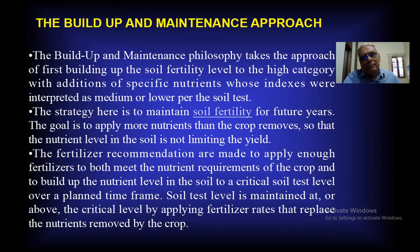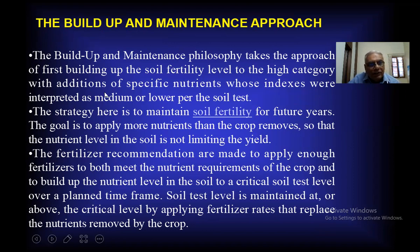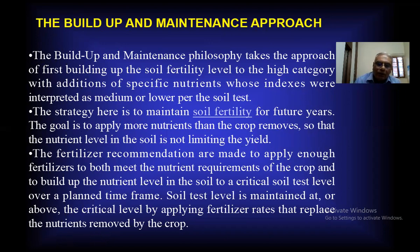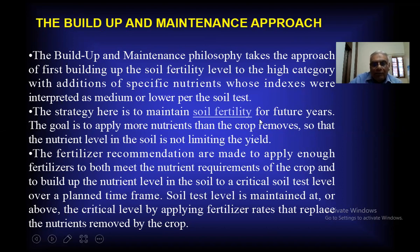The build-up and maintenance approach has been widely used. This philosophy takes the approach of first building up the soil nutrient level to the high category with addition of specific nutrients whose indexes were interpreted as medium or lower as per the soil test. The strategy is to maintain soil fertility for future years. The goal is to apply more nutrients than the crop removes so that the nutrient level in the soil is not limiting. For example, if you grow a maize crop and the nitrogen requirement is 100 kg, then we have to apply 150 to 100 kg nitrogen.